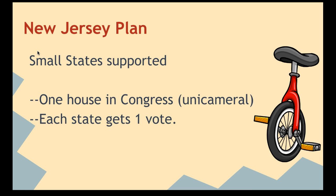The first plan was to have one house in Congress, which would be unicameral — uni means one, like a unicycle. Each state just gets one vote, and so those small states are going to love this plan. That's why it's called the New Jersey Plan. New Jersey representatives suggested it, meaning that the small states with a lower population are equal to those states that have a higher population.